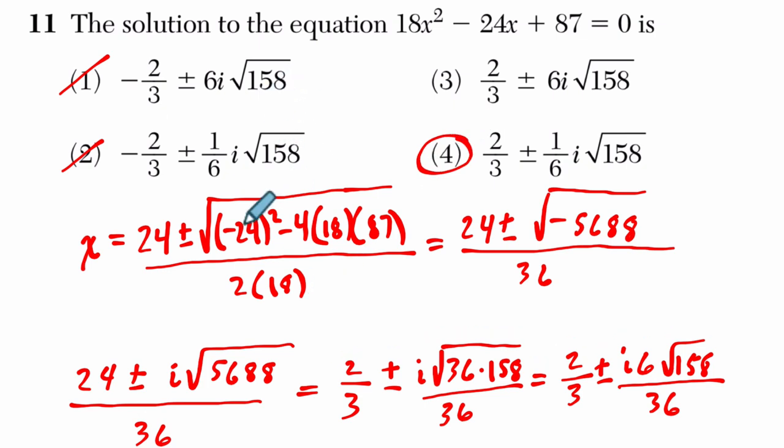So if you're given a larger problem with larger numbers like this, use the choices to your advantage. Here we can see that 158 is a factor of a number. So you can use it to find what perfect square they were reducing. All right. I hope that helped.